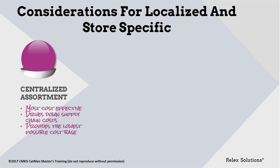More variety also means more warehouse picking locations, leads to lower volumes per product, and thus increases supply chain handling and space costs. Variety means more capital is tied up in stock while supply chain operations are far less cost effective.